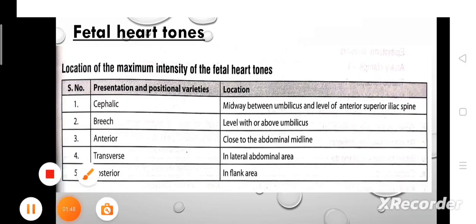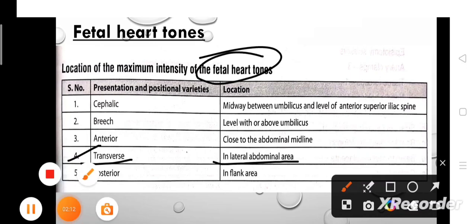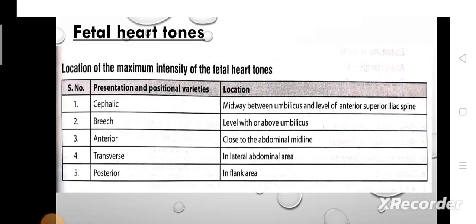If the presentation is transverse, the location of fetal heart tone is in the lateral abdominal area. In transverse position, the uterus lies across — horizontally rather than vertically. So in transverse presentation, the fetal heart tone is located in the lateral abdominal area.